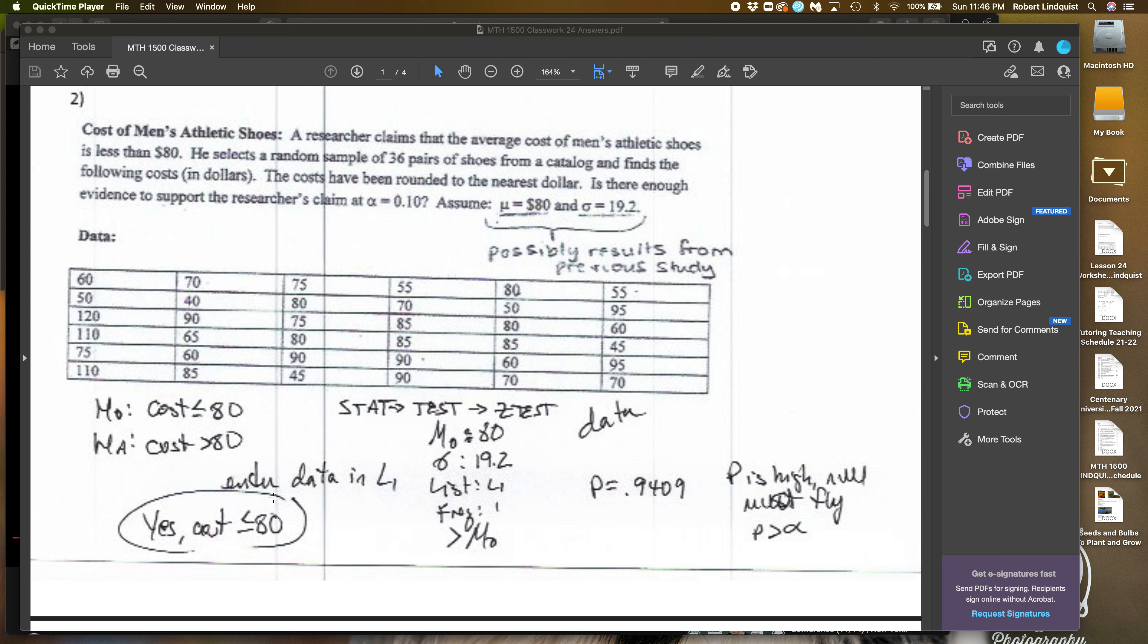And when I punch it in, I come up with P equals 0.9409. P is high, the null must fly. So therefore, yes, the cost generally is less than or equal to $80.